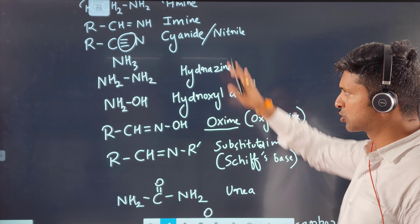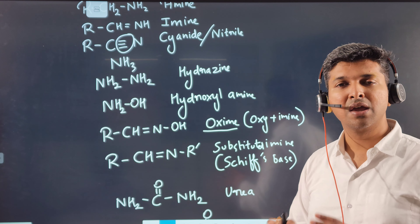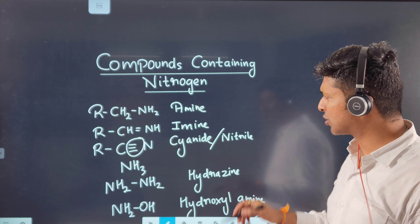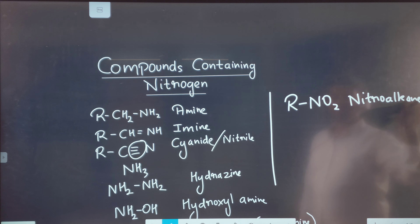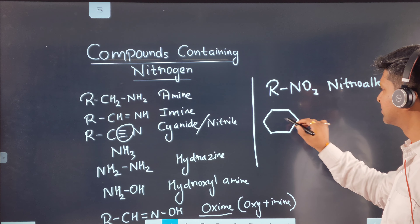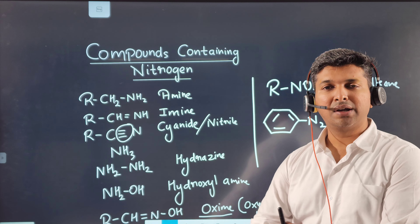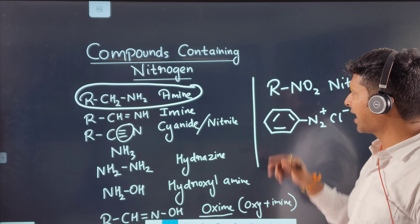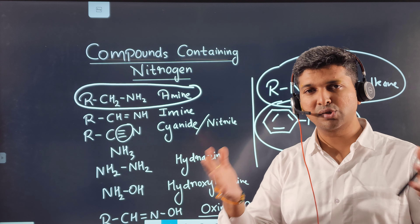These are the most important functional groups containing nitrogen for this chapter, called 'Compounds Containing Nitrogen.' You can add nitroalkane as another nitrogen-containing functional group, and also diazonium chloride, N₂⁺Cl⁻. Traditionally, this chapter is a combination of three topics: amines, nitroalkanes, and diazonium chloride.